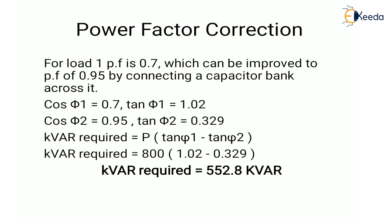Once we have found the KVA rating, next we find the power factor correction. For load 1, the power factor is 0.75, which can be improved to 0.95 by connecting a capacitor bank across it. So cos φ1 = 0.7 (lowest) and cos φ2 = 0.95 (highest). Using the formula KVAR = P × (tan φ1 − tan φ2), the required KVAR value is 552.8 KVAR.